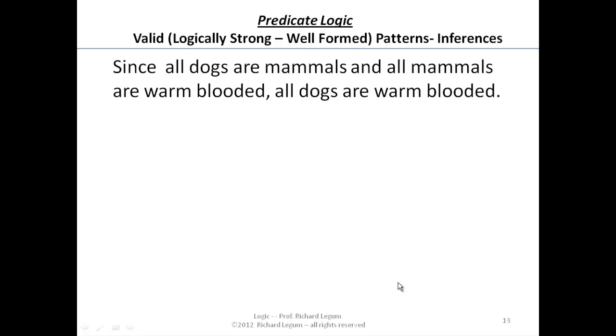Turning to our third example, we're going to find yet another valid pattern of predicate logic, of valid logical form. Since all dogs are mammals and all mammals are warm-blooded, all dogs are warm-blooded. Now 'since' indicates that we have reasons, premises coming, or a premise coming.